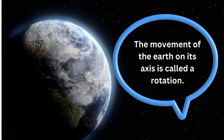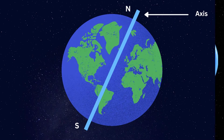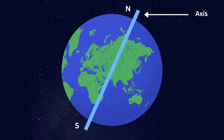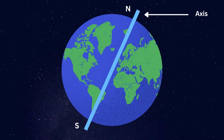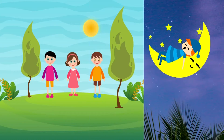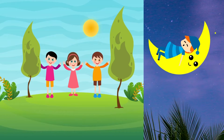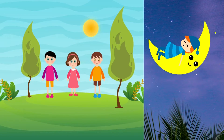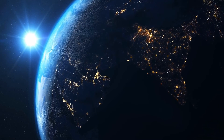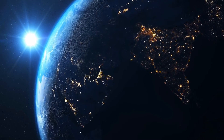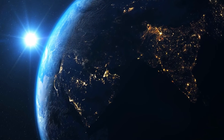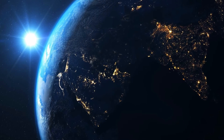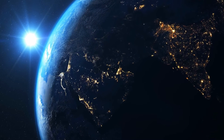The axis is the imaginary line through the Earth that extends from the North Pole to the South Pole. Earth's rotation causes observable patterns like day and night. The light from the sun shines on half of the Earth at any given time — that side is warmer and brighter, so it's daytime.